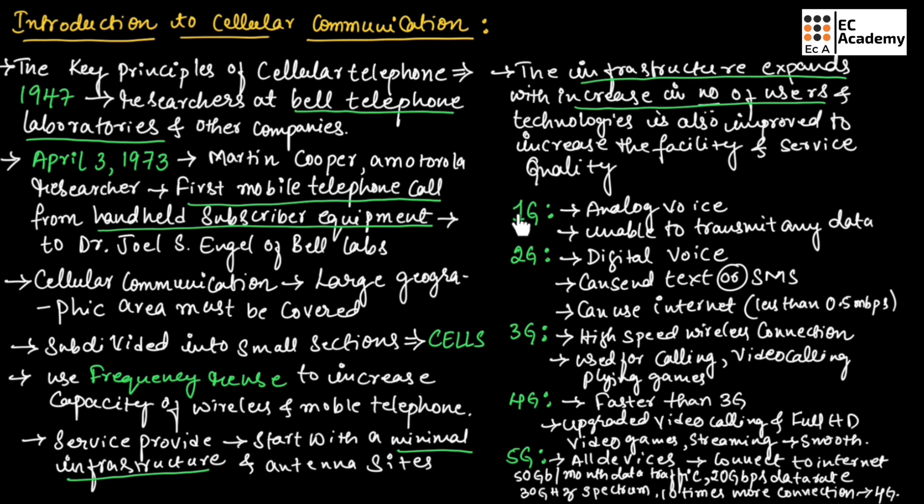There are different generations of wireless cellular communication like first generation, second generation, third generation, fourth generation and fifth generation. In first generation, only analog voice calls were made and it is unable to transmit any data.